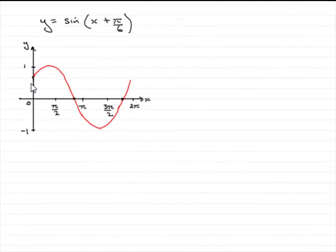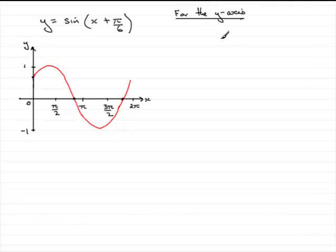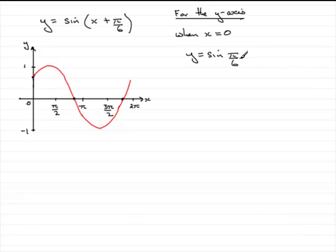Now this part of the question asks us to find where the curve crosses the coordinate axes. Let's start with the y-axis. At that point, x is 0, so we set x equal to 0. When x equals 0, we have y equals sine of (0 + π/6), in other words the sine of π/6. If you don't know this already, make sure your calculator is in radians mode and type in sine of π/6 — you should get one half. So the curve crosses the y-axis at (0, ½).